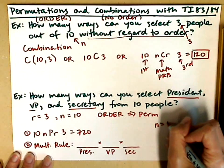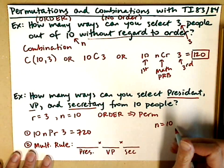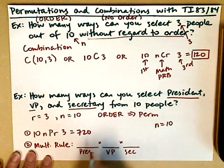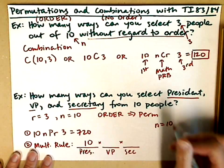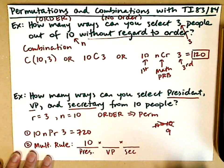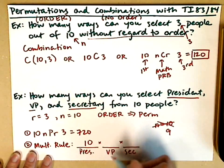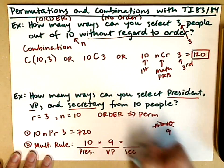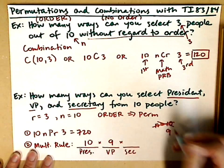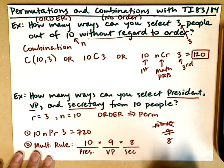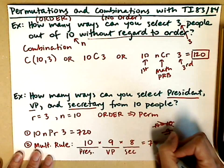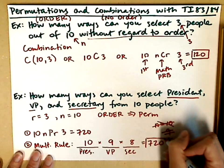We're starting with 10 people. If we select the president first, there are 10 different people we can choose to be president. Now that we've chosen a president, we're down to 9 people, so there are 9 ways to choose a vice president. We've assigned two positions, so we're down to 8, leaving us with 8 ways of selecting a secretary. If you multiply 10 times 9 times 8 in your calculator, you'll find that you get the same result of 720.